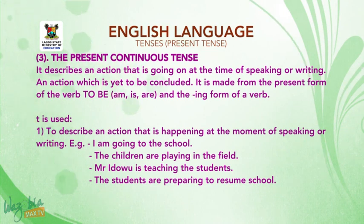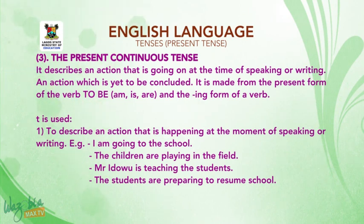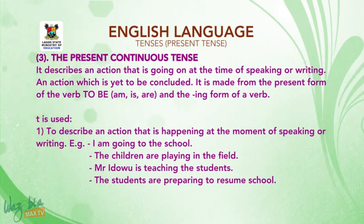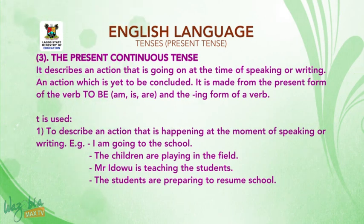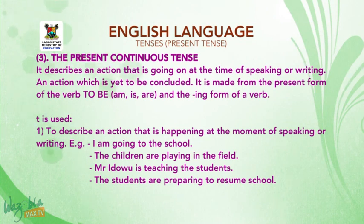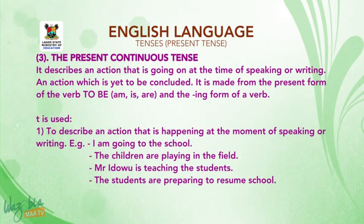Uses of the present continuous tense: 1. It is used to describe an action that is happening at the moment of speaking or writing. For example: I am going to the school. The children are playing in the field. Ms. Adu is teaching the students. The students are preparing to resume school.